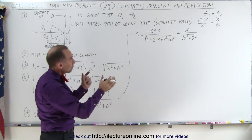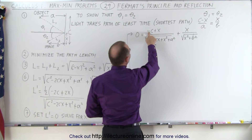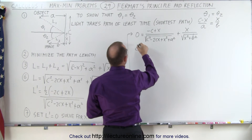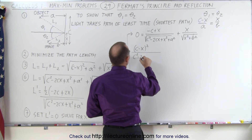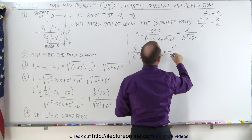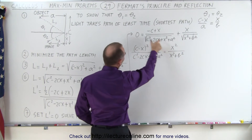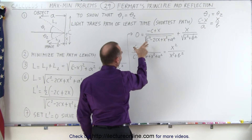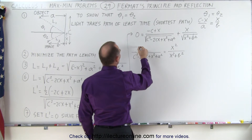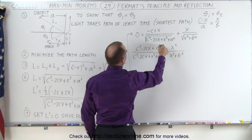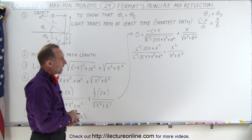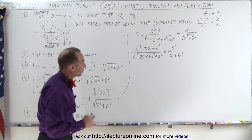Now we separate those two terms. Bringing the first term to the other side changes the sign, giving us x over the square root of x squared plus b squared equals (c minus x) over the square root of c squared minus 2cx plus x squared plus a squared. Squaring both sides: (c minus x) squared divided by (c squared minus 2cx plus x squared plus a squared) equals x squared divided by (x squared plus b squared). Now we cross-multiply and simplify.